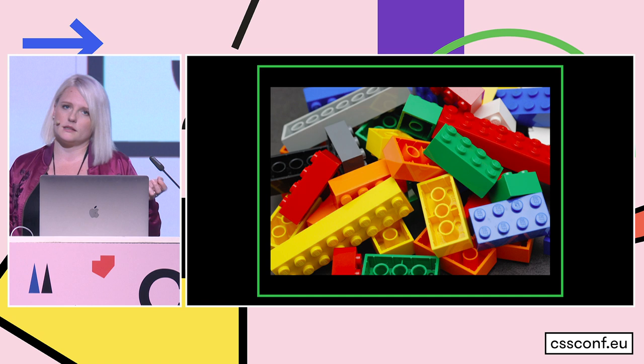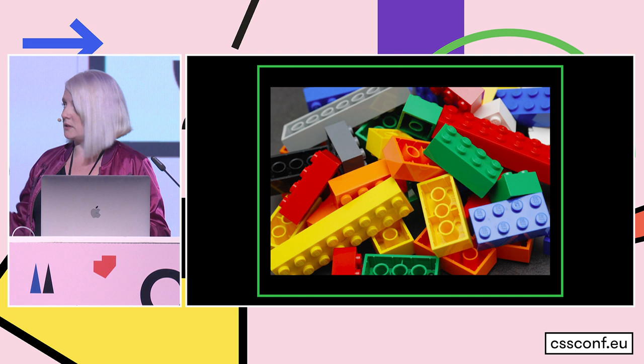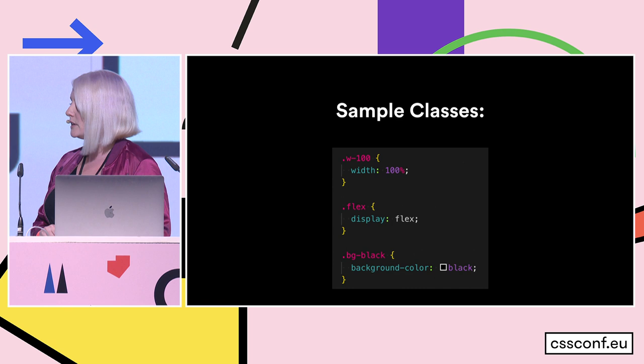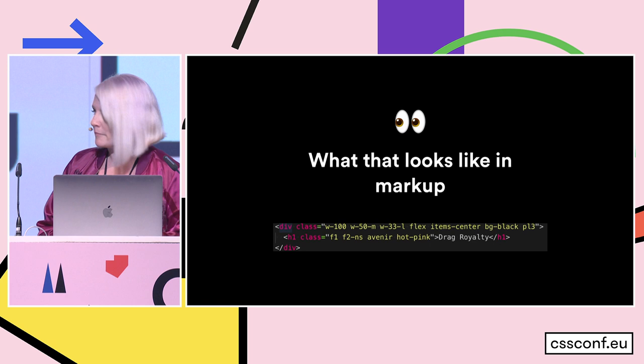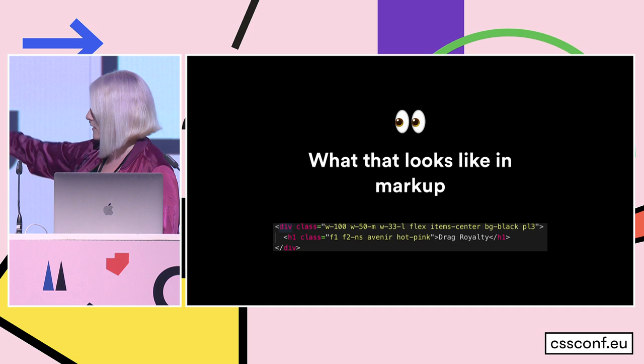You can think of them like Lego blocks. Each class does one thing and one thing only, and the class name describes what it's doing. So with Lego, you might have a green two-by-six. You wouldn't say this green piece is part of the wing of my helicopter. Just some sample classes — W100 would be a width of 100%, flex is display flex, BG black is background color black. So each one is only doing one discrete piece, and you compose them together to build your UI.